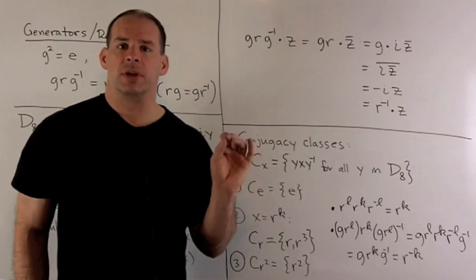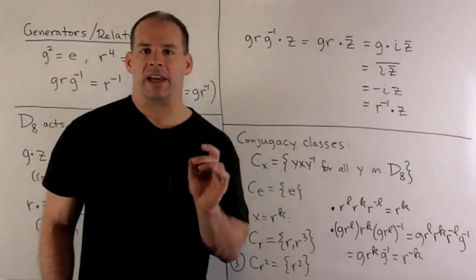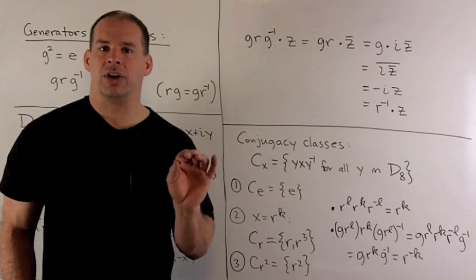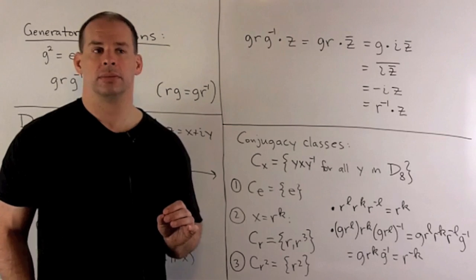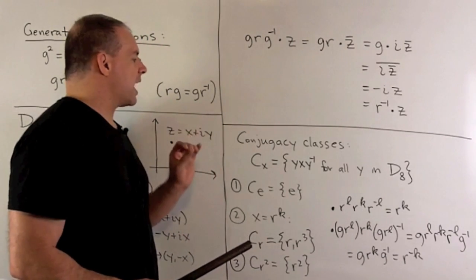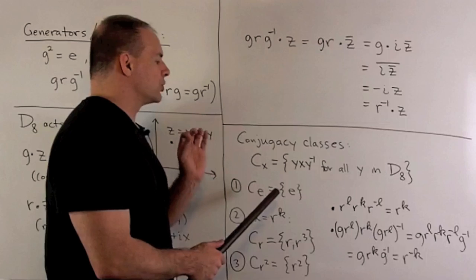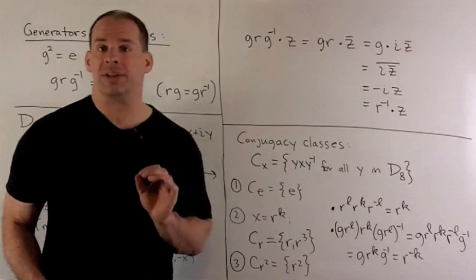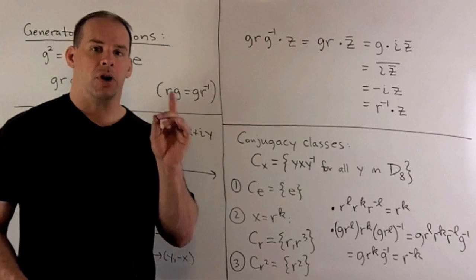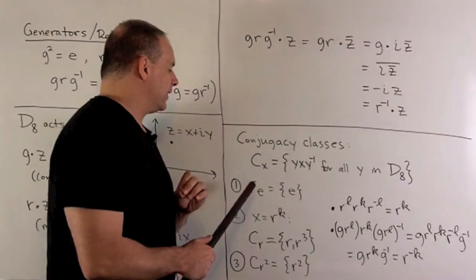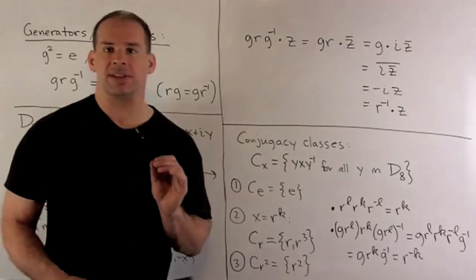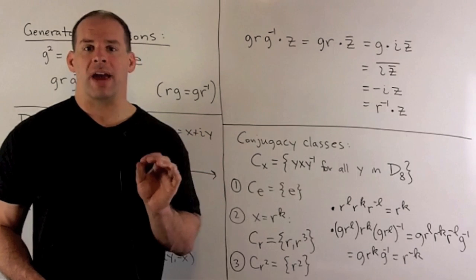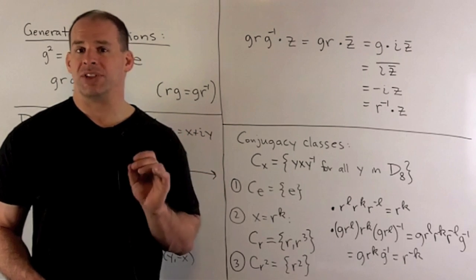Now let's use this to compute conjugacy classes. The idea is that using G, R, and our relation could be a little bit cleaner than using the permutation notation. The conjugacy class for the element X is just all elements of the form Y·X·Y inverse, where we let Y range over all elements in D8. First class: we have the identity, which always goes into a class by itself. Then let's look at rotations — we have R to the k, where k equals one, two, or three.